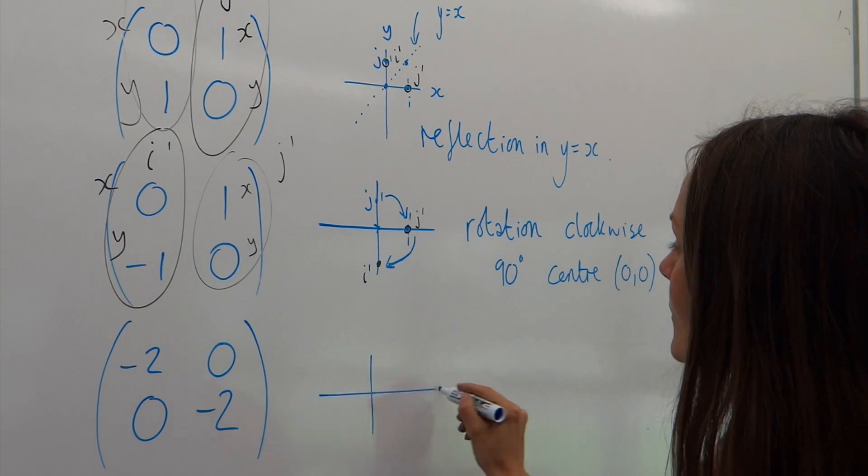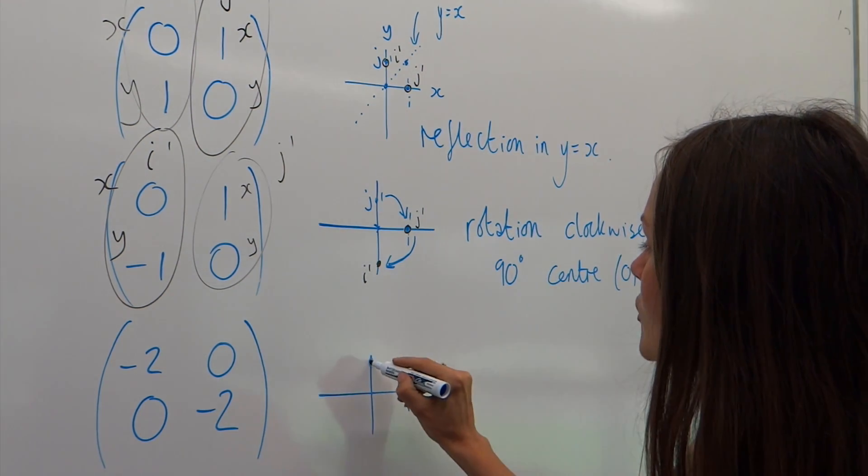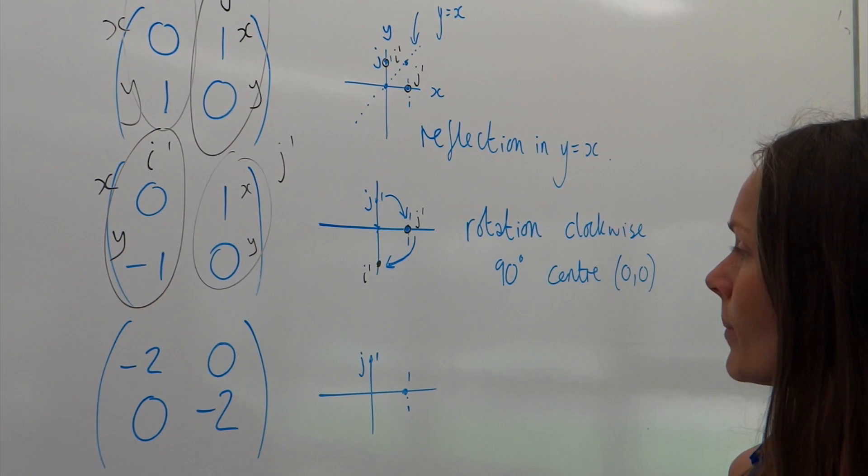Now, onto the last one. Same thing again. Find your i and j. Remember, one unit up, one unit along.